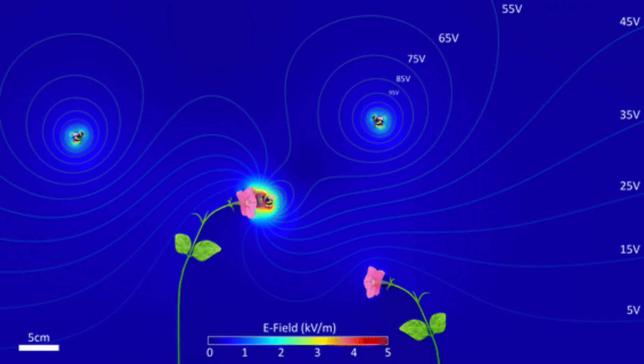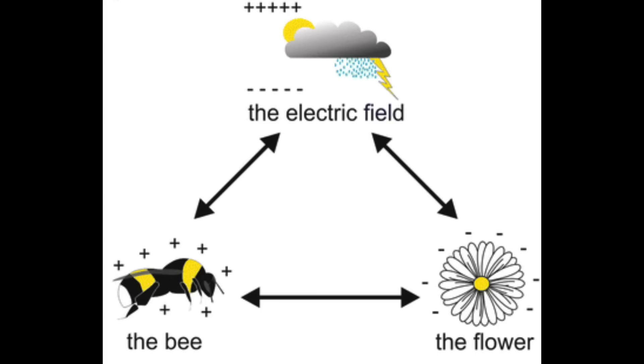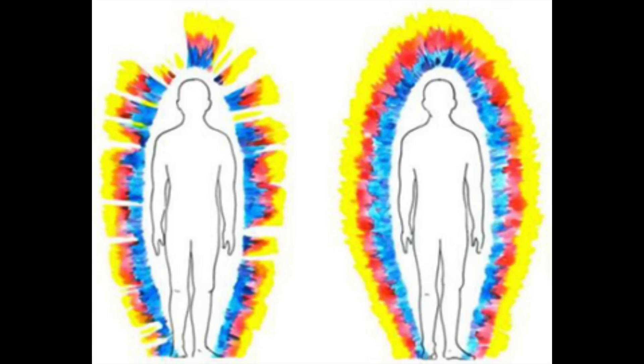From there, they noticed that those fields went absolutely wild when the bees interacted with the flowers. Whether it's insects, fish, birds, reptiles, mammals, whatever—all life we know of has electric fields and interaction with atmospheric potential. The human body electric aural field is no different, and not only interacts, but shapes itself in tune with the health of a person.